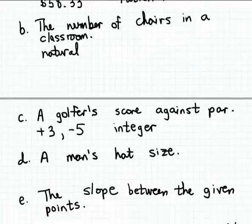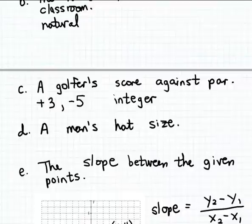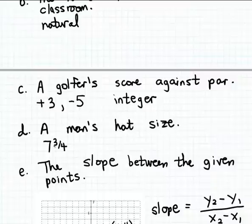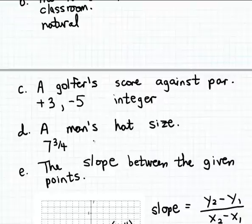The next example is a man's hat size. If you don't wear a hat, you may not know how hat sizes are measured. My hat size, for instance, is seven and three-fourths. Hat sizes are often measured as mixed numbers — a whole number and a fractional part. Numbers that can be expressed as fractions are rational numbers. Seven and three-fourths is not a whole number, so it's not an integer or a natural number, but it is a rational number. So a rational number is the most appropriate for measuring a man's hat size.